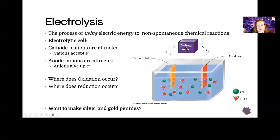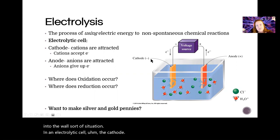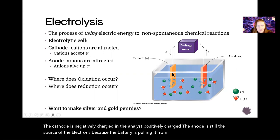So when we say voltage source, that could be a battery already or it could be like a plug straight into the wall sort of situation. So in an electrolytic cell, the cathode is negatively charged and the anode is positively charged. The anode is still the source of the electrons because the battery is pulling it from the anode and pushing it into the cathode.